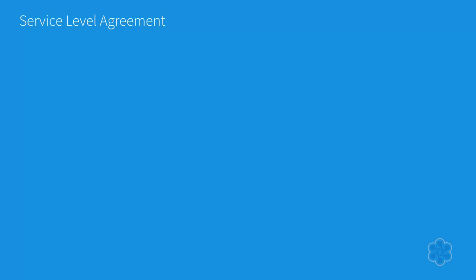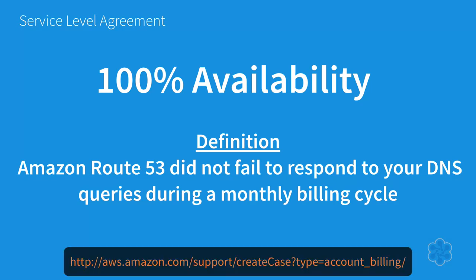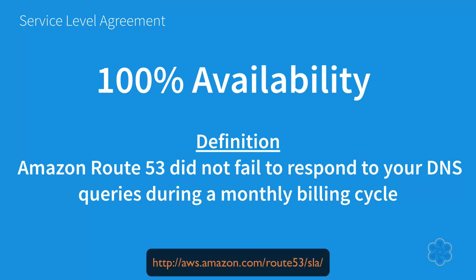AWS has an SLA in place for 100% availability of Route 53, and their definition of 100% is that Amazon Route 53 did not fail to respond to your DNS queries during a monthly billing cycle. In the event of a service outage, AWS works on a service credit model, which are calculated on one day of service credit based on the previous monthly billing cycle prior to the outage, which may then be applied to future payments. To claim a service credit, you need to open a case in the AWS Support Center. For more details on the SLA requirements, please review the Route 53 SLA documentation.